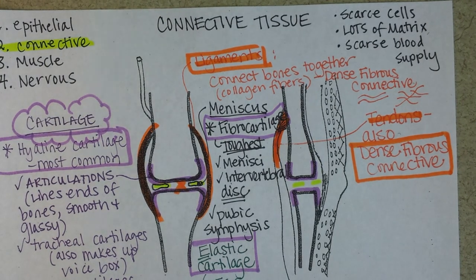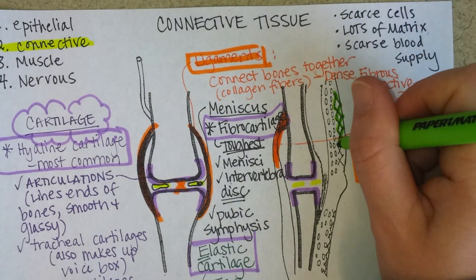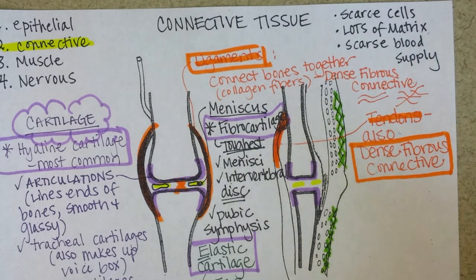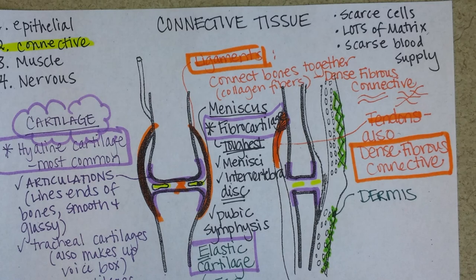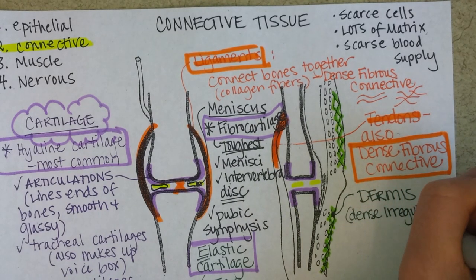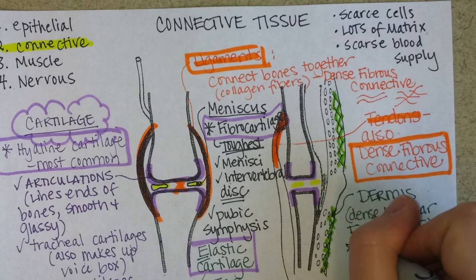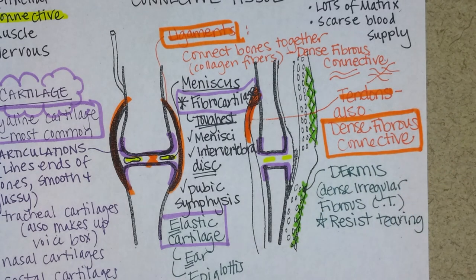The dense irregular fibrous connective tissue is found beneath your epidermis. The epidermis is stratified squamous epithelial — the outer layer. Below that you have a lot of strong collagen fibers that make up the dermis, shown here as little X's in green. The dermis means skin but it's actually underneath what you think of as your skin. Its main purpose is to resist tearing. As we get older it starts to break down, which is why elderly people can sometimes very easily cut their skin — they've lost some of the collagen fibers.